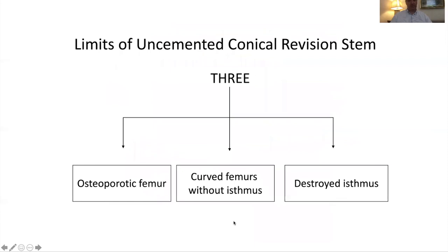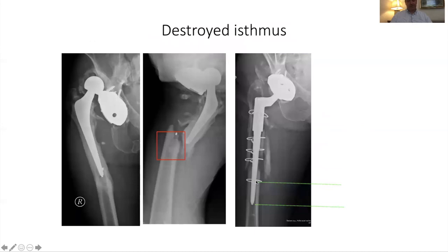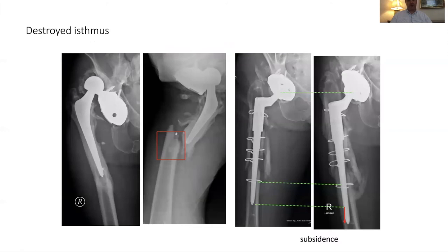The limits of uncemented cementless revision stems come into play with osteoporotic femurs, those with curved femurs without an isthmus, or where the isthmus has been destroyed. In one example, the isthmus is no longer really present — an undersized tapered stem was used, there was inadequate fixation, the stem subsided substantially, and there was failure.